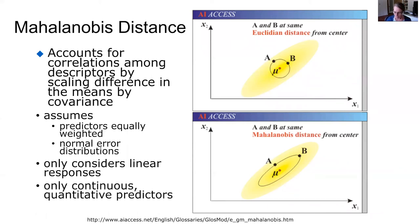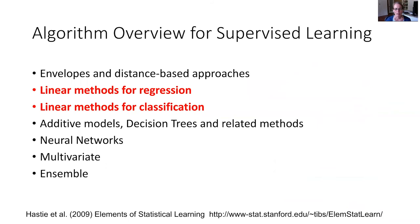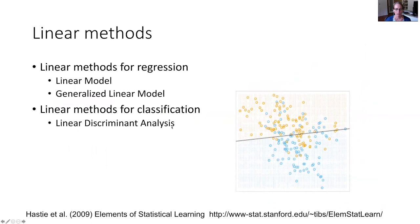Moving to the next stage, we can talk about linear methods for regression and classification. Linear methods for classification I've already illustrated with linear discriminant analysis. I'll talk about the classic linear model and how it has been modified as the generalized linear model — generalized in ways that better accommodate the kinds of data and problems we have in species distribution modeling.